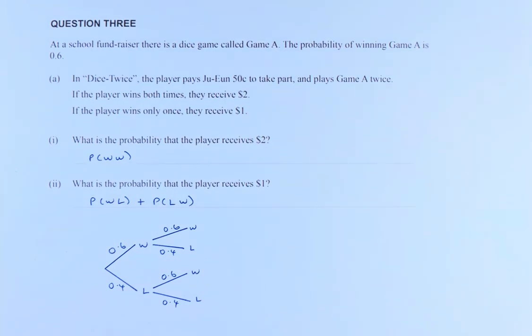At the school fundraiser, there is a dice game called Game A. The probability of winning Game A is 0.6. In dice twice, the player pays 50 cents to take part and plays Game A twice. If a player wins both times, they receive $2. If the player wins only once, they receive $1.